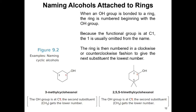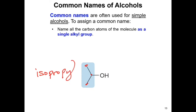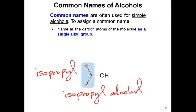Simple alcohols are known by their common names: name all carbon atoms as a single alkyl group followed by the word 'alcohol.' For example, this group is isopropyl because it contains three carbon atoms, so the name is isopropyl alcohol. Using the IUPAC system, the longest chain has three carbons and the hydroxy group is on the second carbon, so it's propan-2-ol.